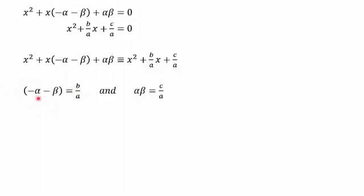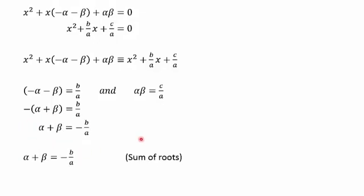This equation over here, -α - β = b/a, we can make that look a little bit nicer. So I take out the minus one and I bring it over to the other side. And there I have my sum of roots. Remember my roots were α and β. Sum means plus, so my sum of roots is equivalent to -b/a.